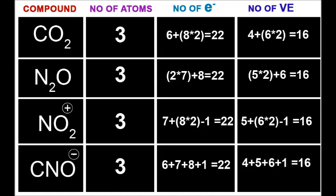Now you see carbon dioxide, N2O, NO2 plus, and CNO minus all have the same total number of electrons. Now you have an idea about what isosterous means.